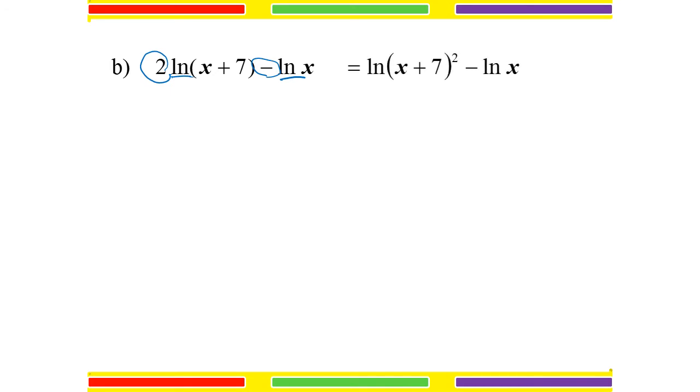For question B: 2 natural log of (X plus 7) minus natural log of X. Both are natural logs, so the same base E. Before applying division, make sure each term has coefficient 1 — so the 2 becomes the power of (X plus 7). We get natural log of (X plus 7) squared minus natural log of X, which gives natural log of (X plus 7) squared divided by X.